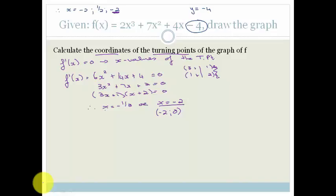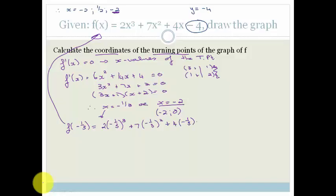Now we need to find the y-value for x equals minus a third. Remember, Grade 12, we are trying to find the value of y when x equals minus a third for the turning point, so we always substitute back into the original function. So we calculate f(minus a third) = 2 times (minus a third) cubed plus 7 times (minus a third) squared plus 4 times (minus a third) minus 4.